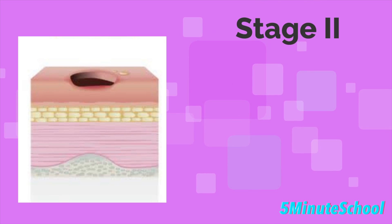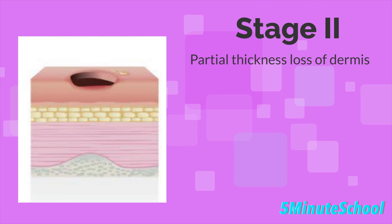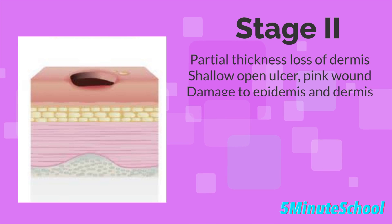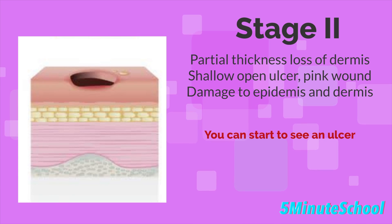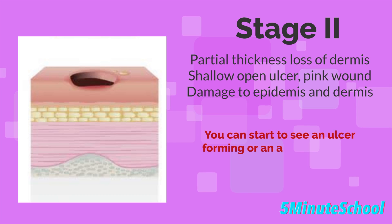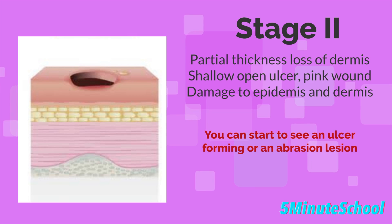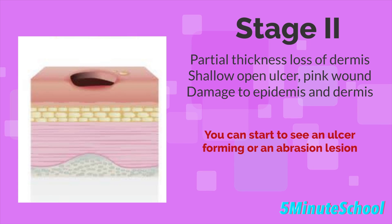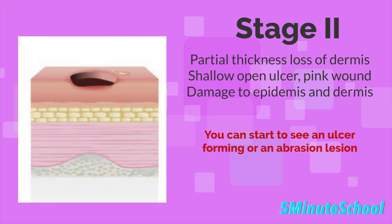Stage two is called partial thickness. In partial thickness there is loss of the dermis, a shallow open ulcer, and a pink wound develops. There is damage to the epidermis and the dermis, and an ulcer starts to form that looks like a small blister or an abrasion lesion.